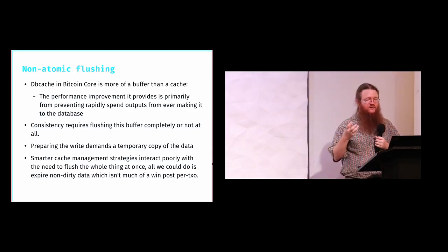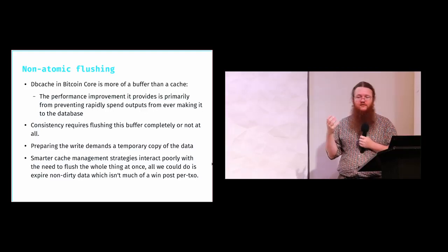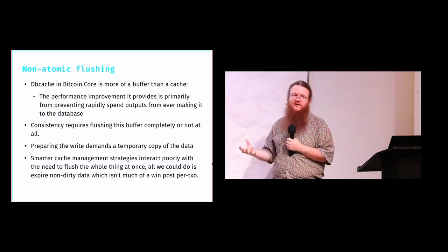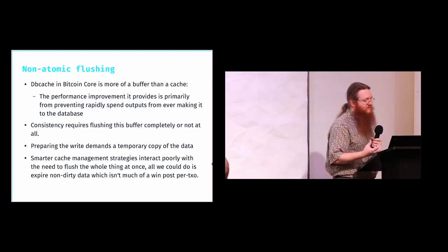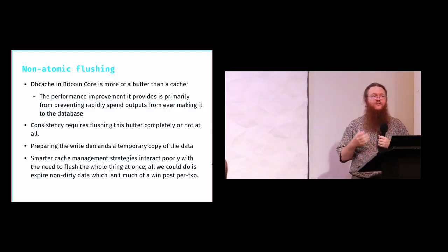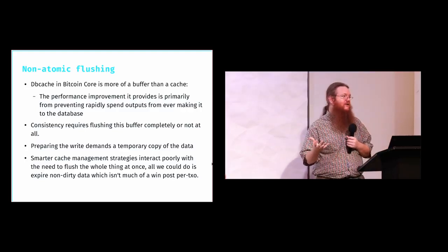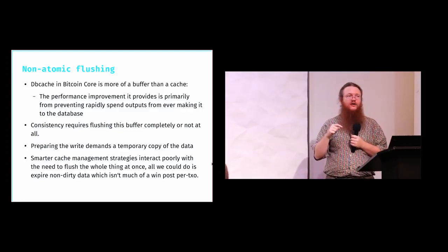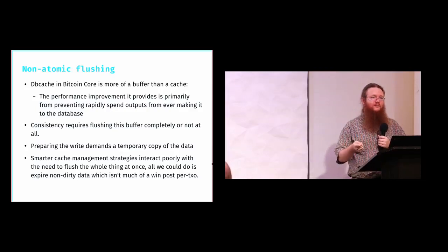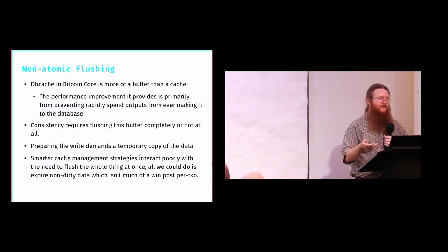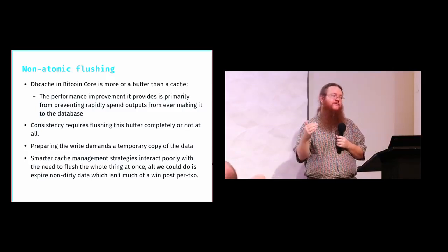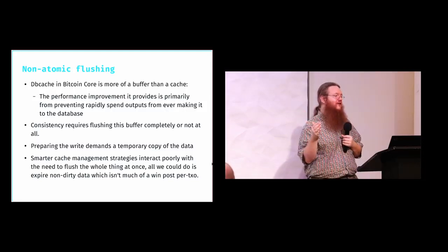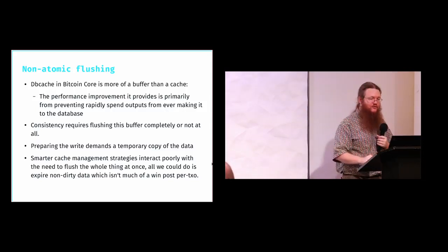In order to do that flush, we'd use a database transaction that required basically creating another whole copy of the data being flushed. This extra operation meant we lost half of the memory that we could tolerate in our cache due to this really short 100-millisecond memory peak. In older versions like 0.14, if you configure a database cache of a gigabyte, we really use 500 megabytes for caching and leave another 500 megabytes unused just to handle this peak that occurs during flushing.